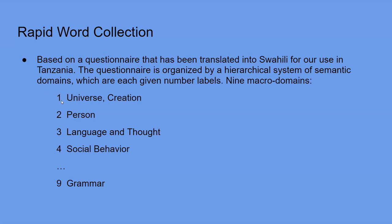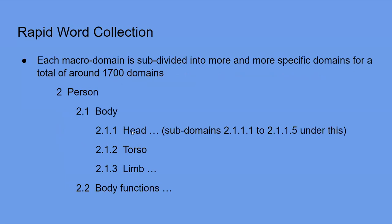Each of these macro domains consists of many sub-domains to get more and more specific as you go down the tree. Within each domain you can gather specific words connected to it. Each domain is given a number — at the highest level they're just numbered one through nine. Each macro domain is subdivided into more specific domains for a total of around 1700 domains. So within macro domain two for 'person,' one level down you have 2.1 for body and 2.2 for body functions. Within 2.1, there are sub-domains like 2.1.1 for head, 2.1.2 for torso, 2.1.3 for limbs, and further sub-domains for eye, nose, and senses.